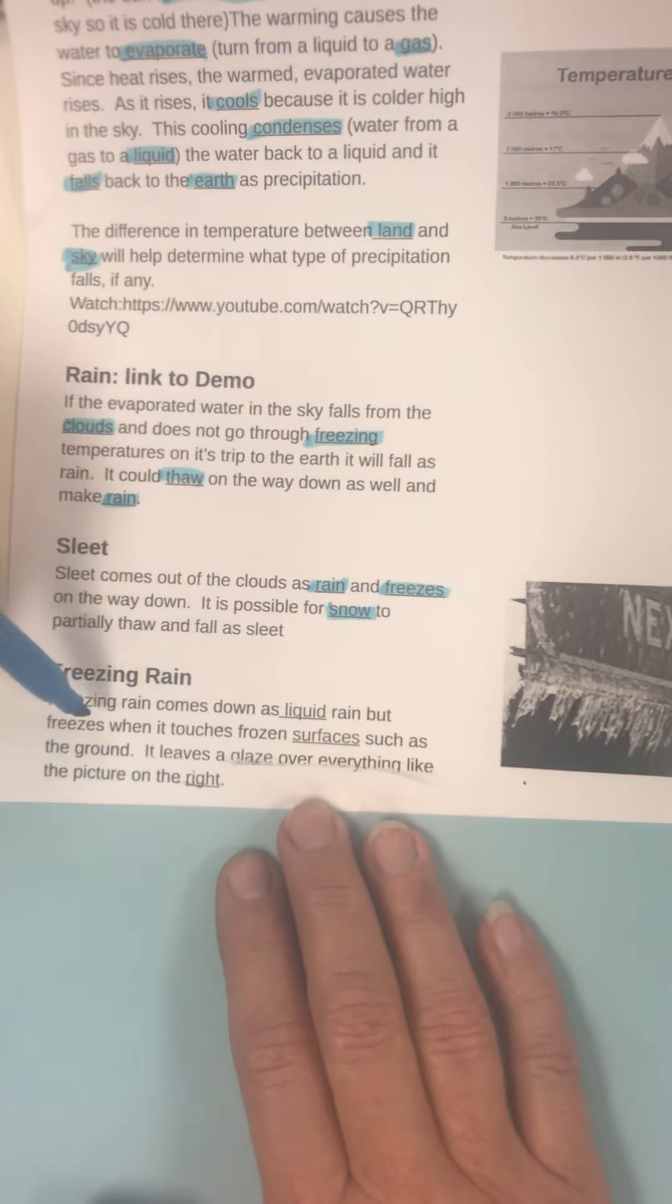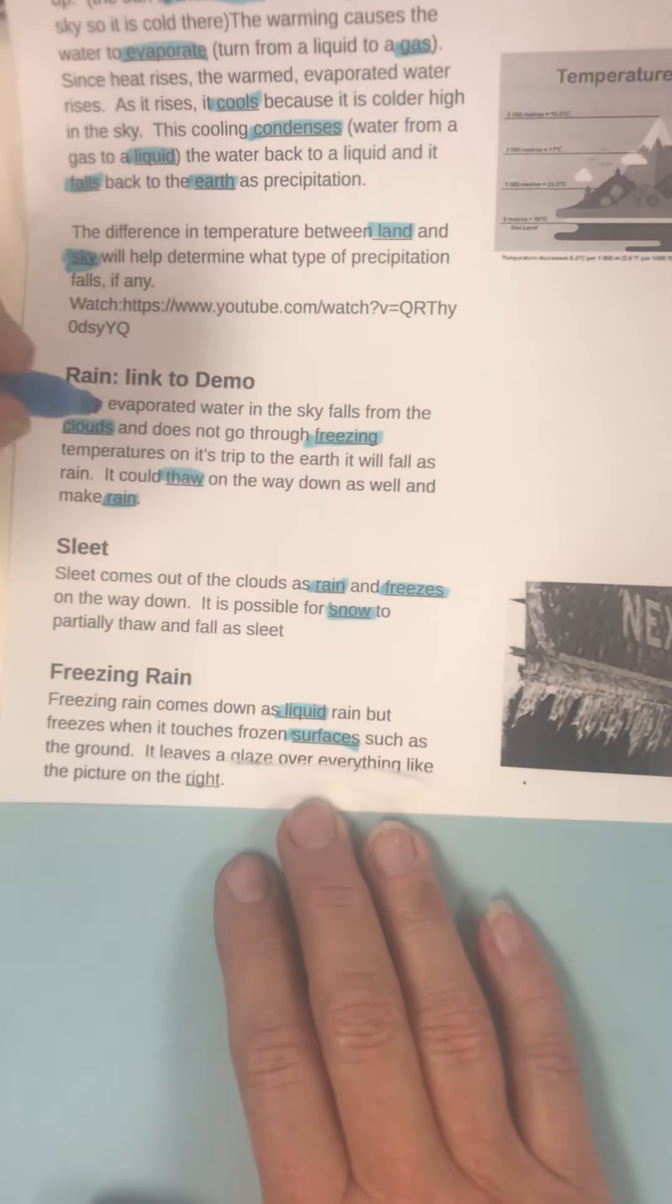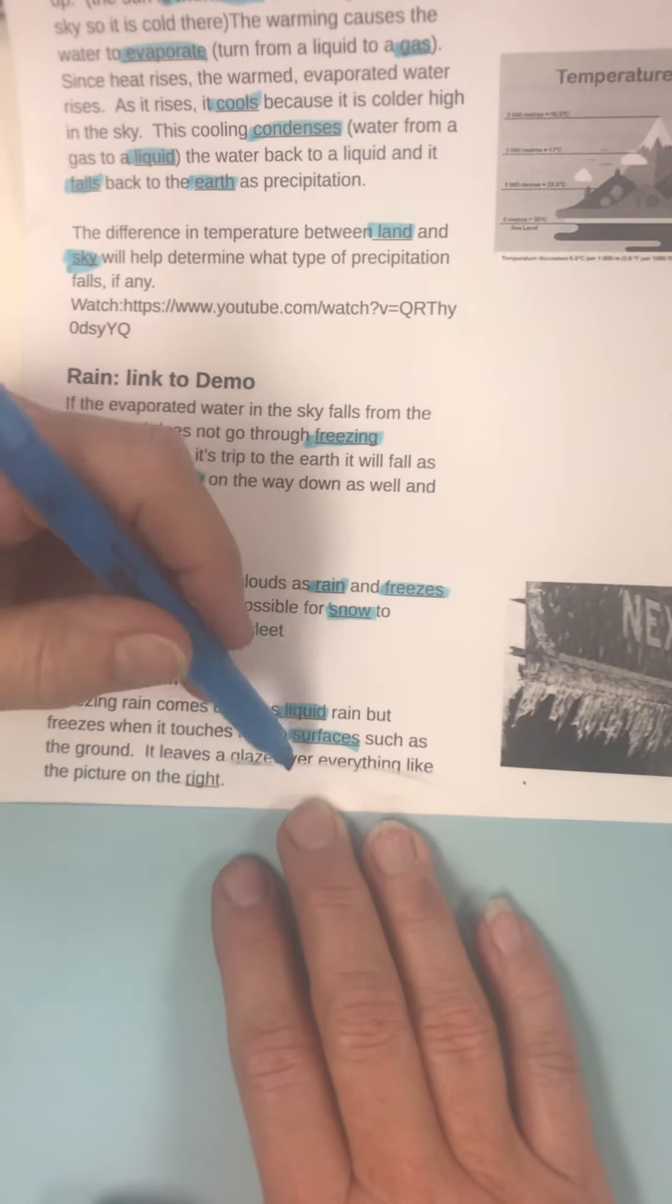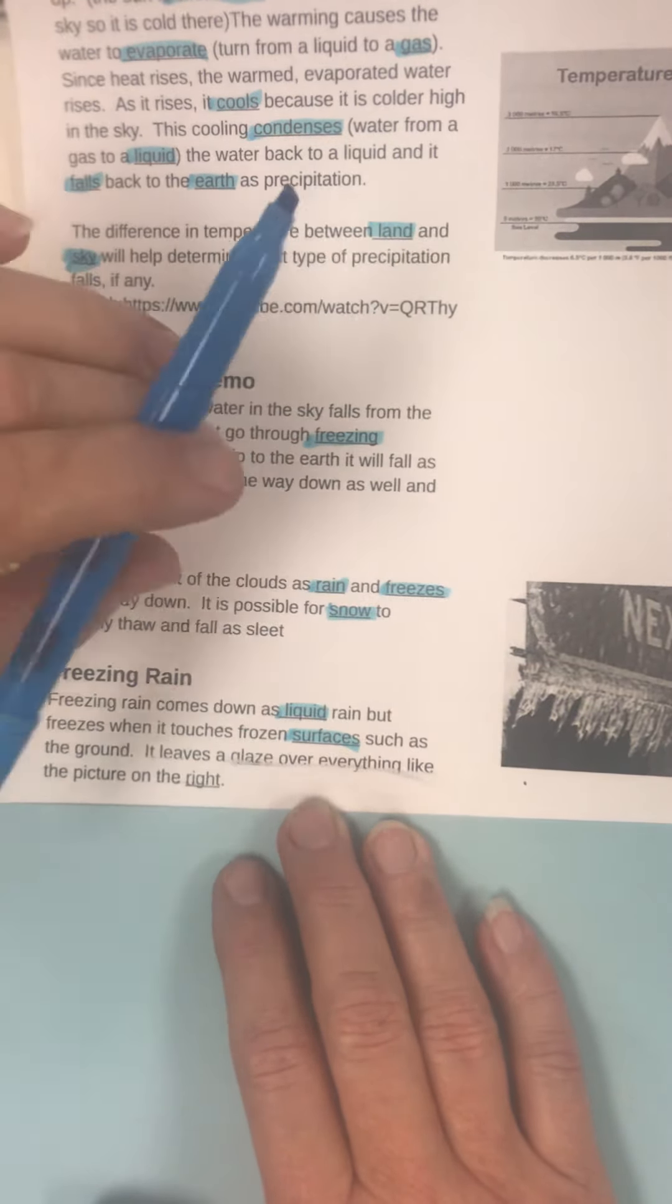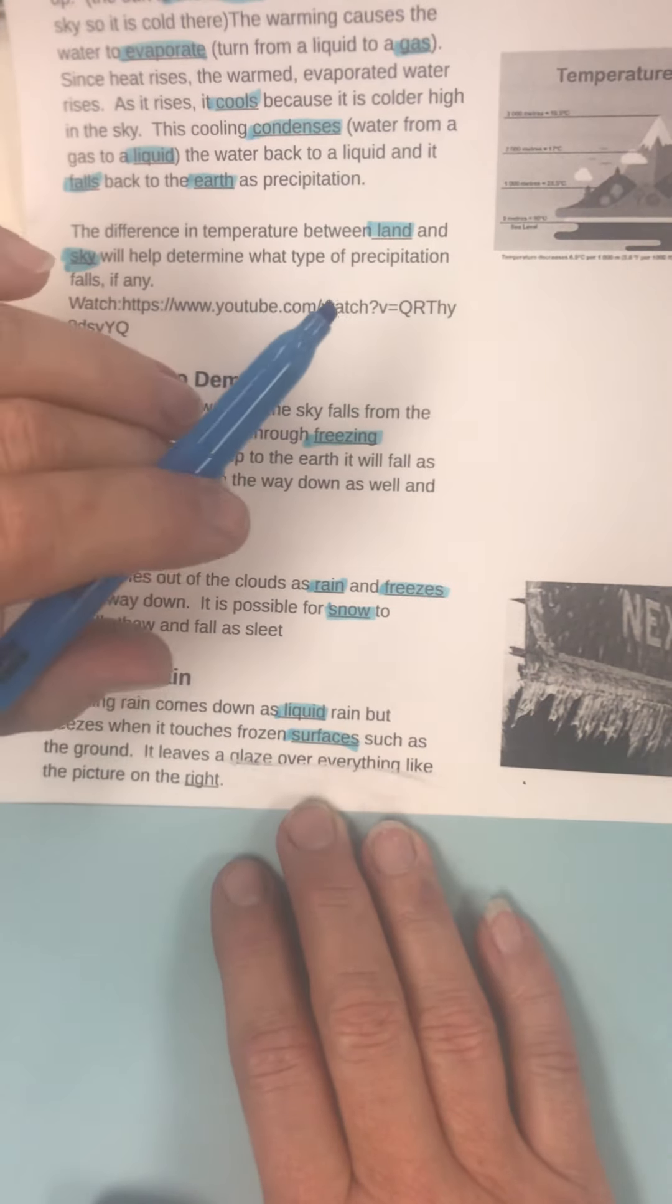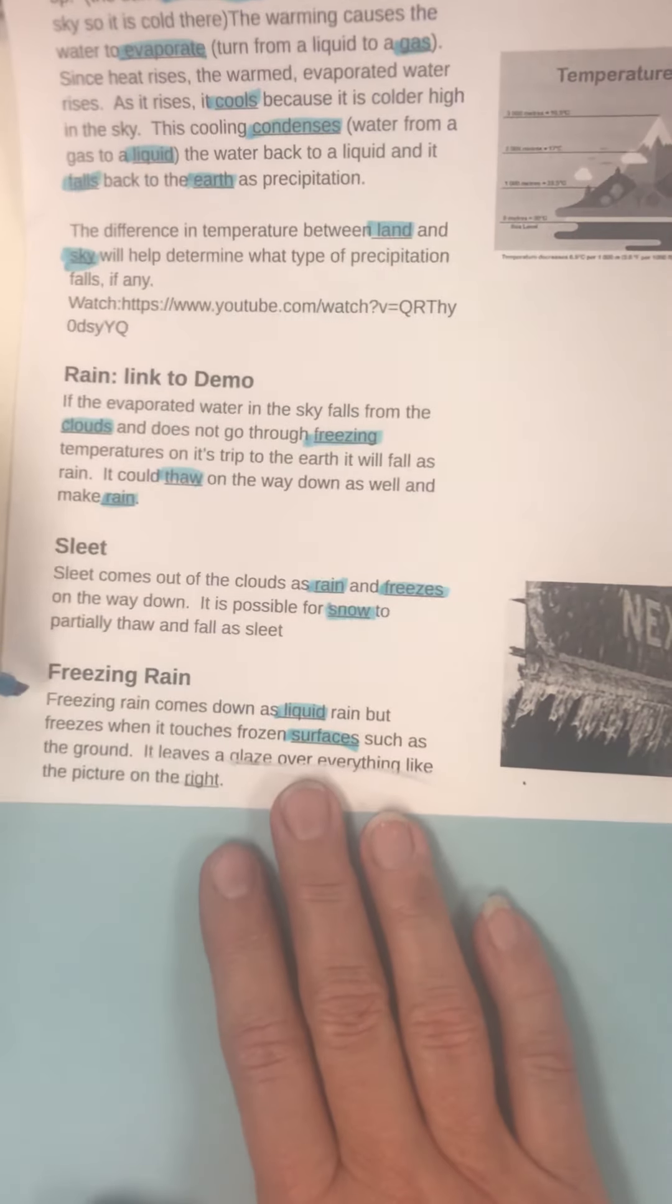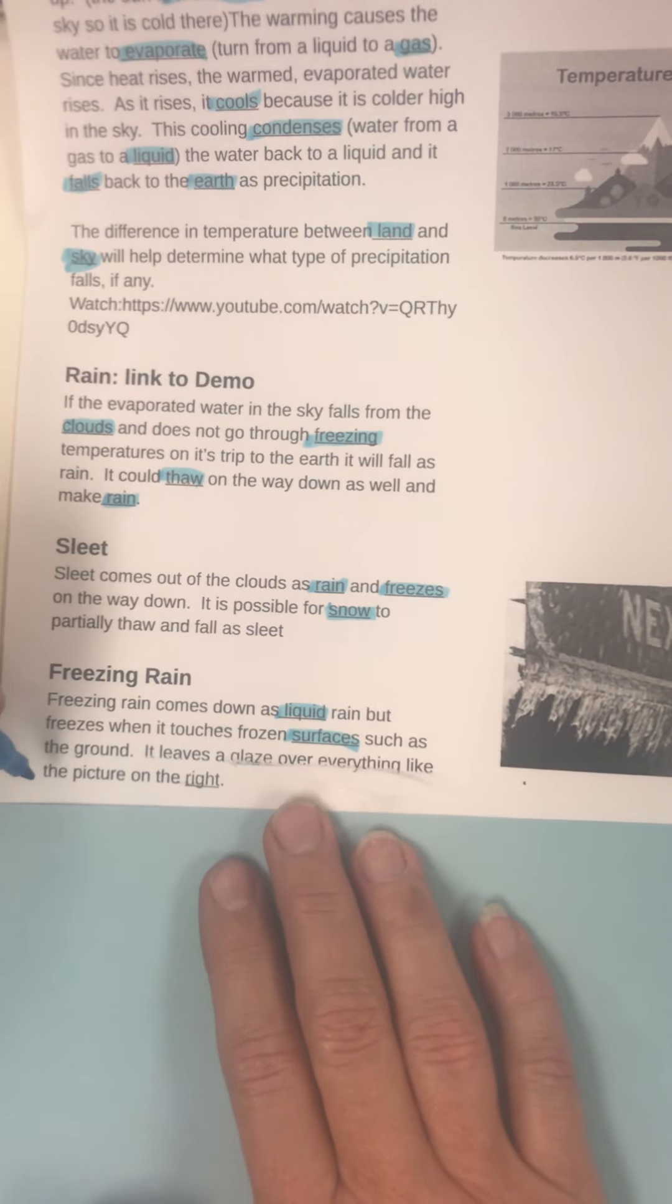Freezing rain. Freezing rain comes down as liquid rain, but freezes when it touches frozen surfaces, such as the ground. So, it looks like a glaze over everything. It leaves a glaze over everything like the picture on the right. This is like a sign. So, it doesn't freeze. The water doesn't freeze until it hits a frozen surface. That's what freezing rain is. A lot of people get sleet and freezing rain confused. Sleet freezes on its way down, and freezing rain freezes on contact.